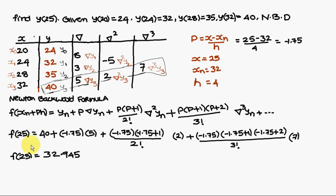Let us verify: 25 lies between 24 and 28, so the result should lie between 32 and 35. Since 32.945 is in that range, the value is correct. In Newton backward interpolation, always substitute the bottom diagonal values; in Newton forward interpolation, substitute the top diagonal values: 24, 8, minus 5, 7.